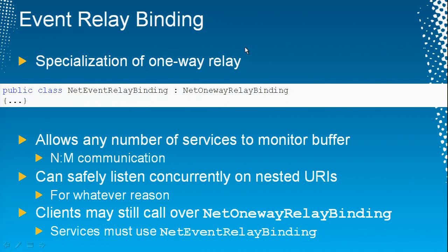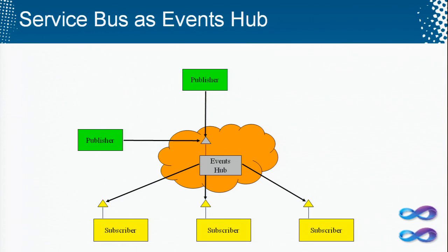The real use for the one-way relay binding is a specialization of it: the event relay binding. The event relay binding is just like the one-way relay binding except it allows any number of services to monitor the same address in a service bus. Normally, the TCP relay binding and the one-way relay binding require unique addresses — just like in C#, it's a really bad thing if two objects share the same memory address. But the event relay binding allows multiple services to monitor the same address. Since you can have any number of clients posting messages, what you have is a general-purpose end-to-end communication mechanism. If you have the event relay binding, you stop viewing the service bus as a relay service and start viewing it as an event hub — that's the second manifestation of the service bus.